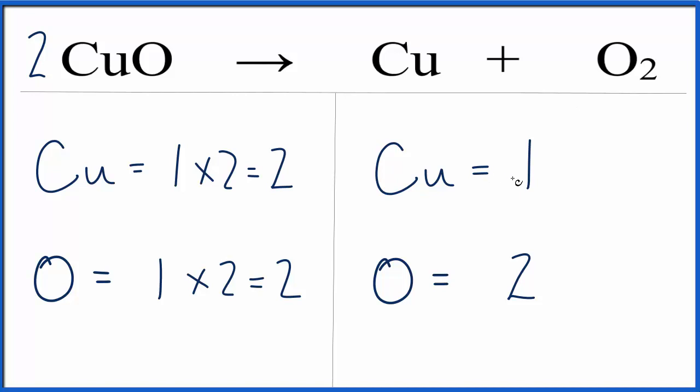Here on the product side, we have 1 copper, and we want to have 2 to balance this copper out. So we put a coefficient of 2 in front of the copper, and the 1 times the 2, that equals 2. And now everything's the same on each side of the equation, and this equation is balanced.